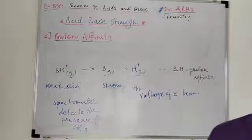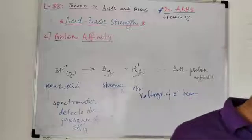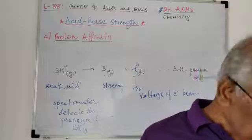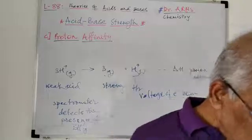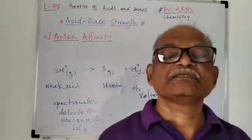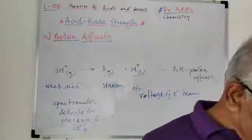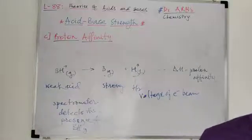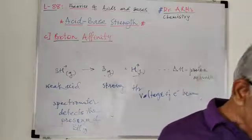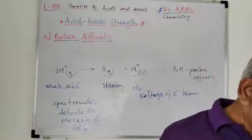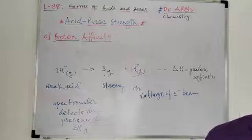These proton affinity values have a large uncertainty because the molecules involved are frequently in an excited state — this is because they are provided with higher energy, and that is why they frequently appear in the excited state. In such cases the values have large uncertainty, and some do not show the formation of BH+. Under normal experimental conditions, the proton affinity must be combined with solvent or other environmental effects to fit the reactions.